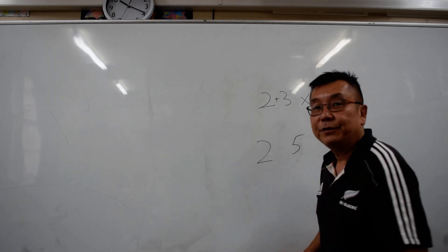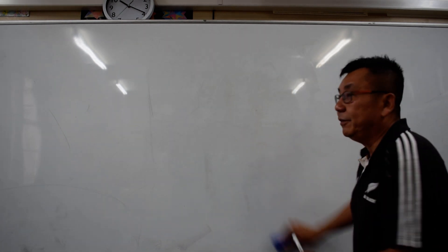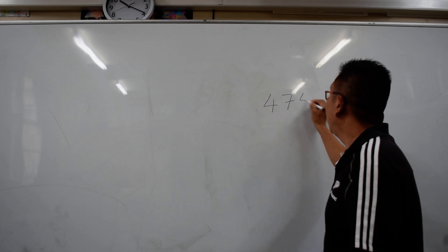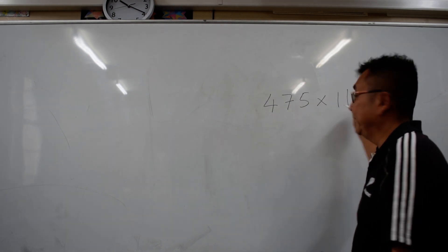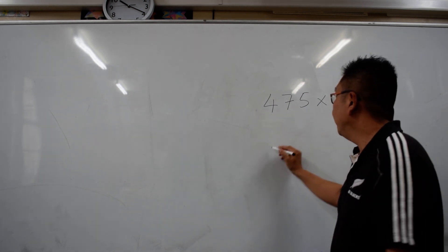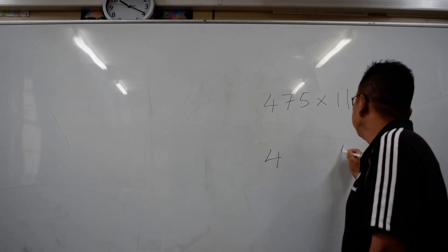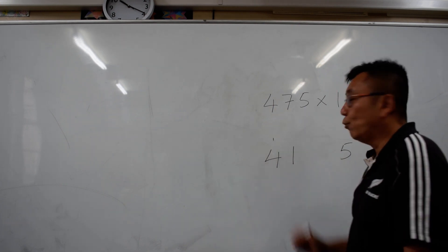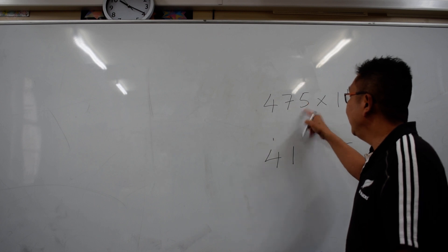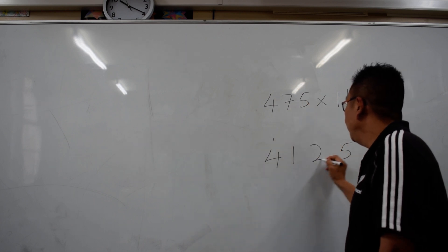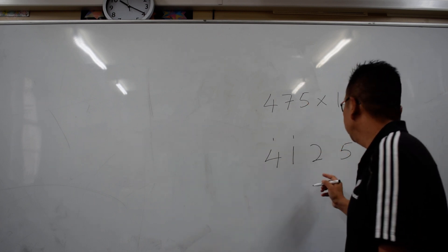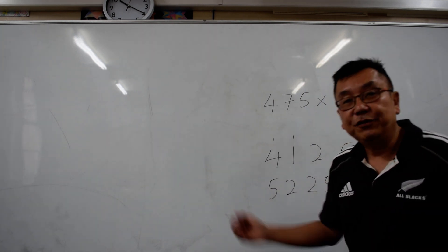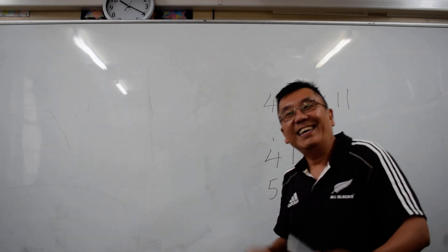Now we are going to do a more complicated multiplication by 11. For example, 475 times 11. So 4 and 5 remain at the ends. Then 4 and 7 is 11, so write 1 and carry 1. And 7 and 5 is 12, write 2 and carry 1. So the final answer is going to be 5225. Please check the answer because I am not totally sure.